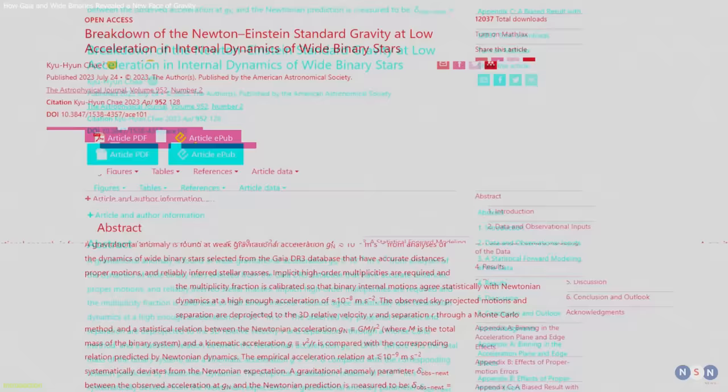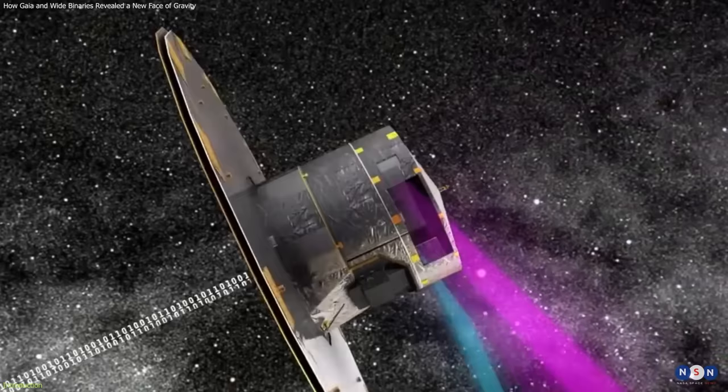A new study claims to have found smoking gun evidence for modified gravity at very low accelerations from the observations of wide binary stars by the Gaia Space Telescope.